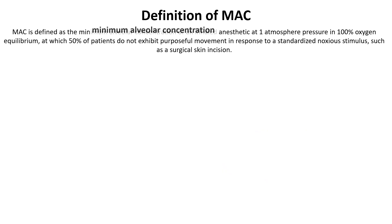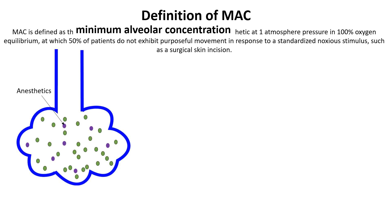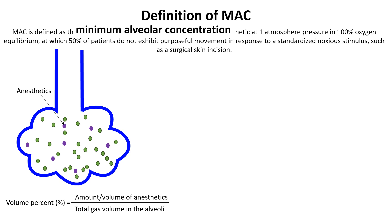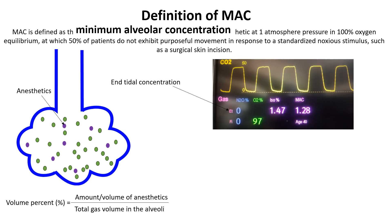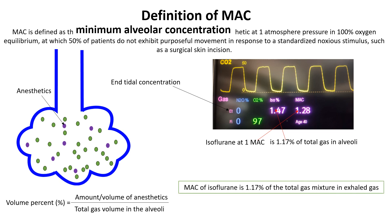Firstly, MAC deals with the concentration of anesthetic in the alveoli. It is expressed as the volume percent of alveolar gas, representing the percentage of anesthetic in the total volume of gases in the alveoli. It is measured by a gas analyzer from the end-tidal or exhaled gas. For example, at MAC, the concentration of isoflurane is about 1.17% of the total gas mixture in the alveoli. At the alveolar or end-tidal concentration of 1.17%, the MAC of isoflurane is 1. In the picture shown here, the patient's isoflurane concentration is 1.47% of total gas, which corresponds to 1.28 times its MAC value.